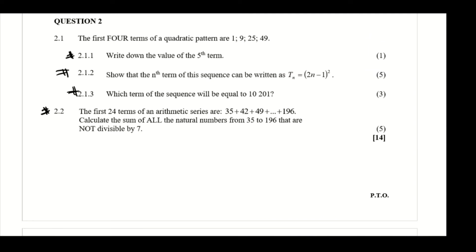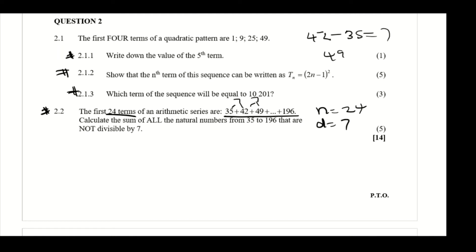Now we do question 2.2. We are told the first 24 terms of an arithmetic series run from 35 up to 196. So n = 24. The common difference for this sequence is 7 — you can verify: 42 − 35 = 7, and 49 − 42 = 7.